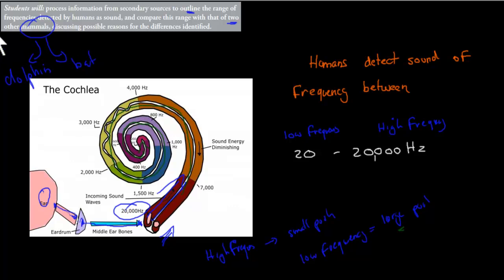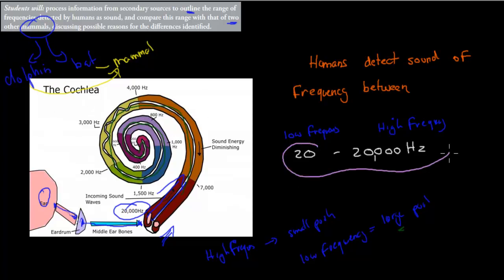Remember, even though the bat looks like a bird, it's not a bird — it's a mammal. And even though the dolphin looks like a fish, it's not a fish — it's also a mammal. So both of these are examples of mammals. We need to know their frequencies and compare them to the human range of 20 to 20,000 Hz.